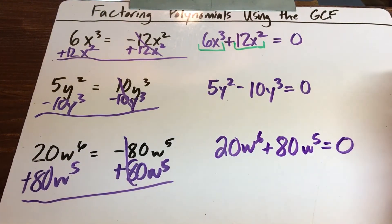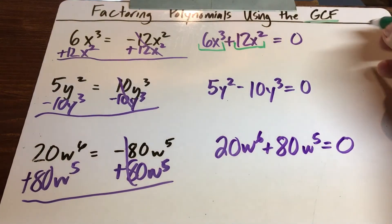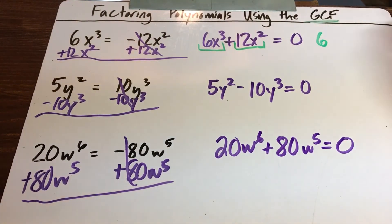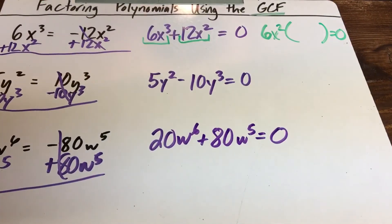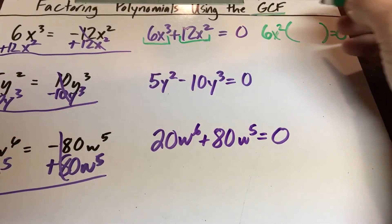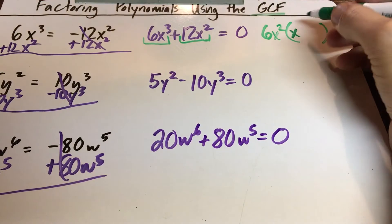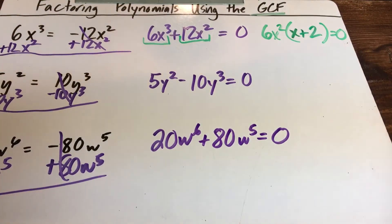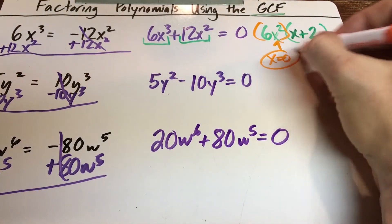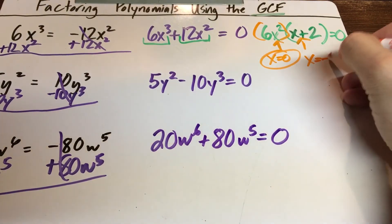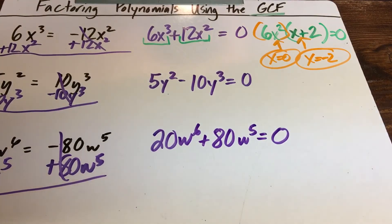Going quickly now. Find the GCF: both terms go into six, and they both have at least two X's. Divide by six and take away two X's: that leaves one X for the first term, and 12 divided by six is two with no X's left. Zero product property: 6x² = 0 gives x = 0, and x + 2 = 0 gives x = negative two.